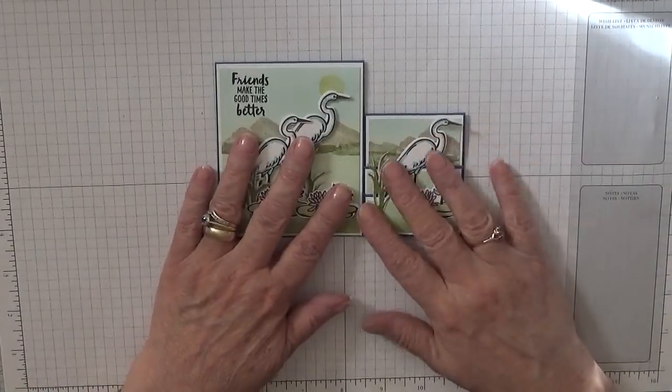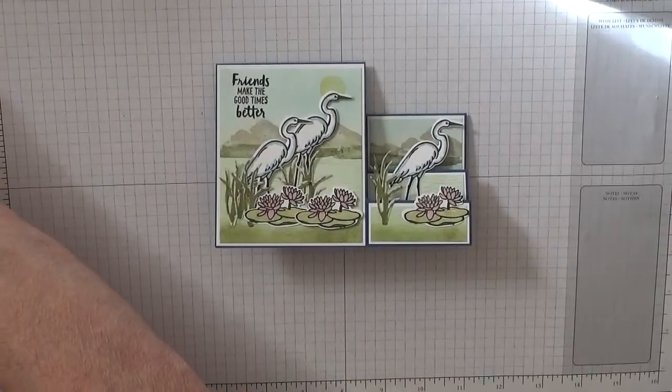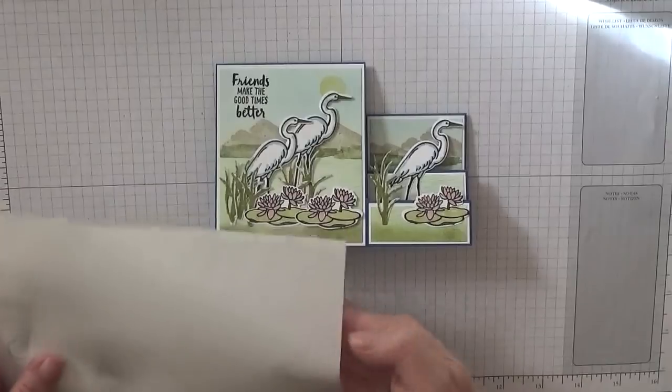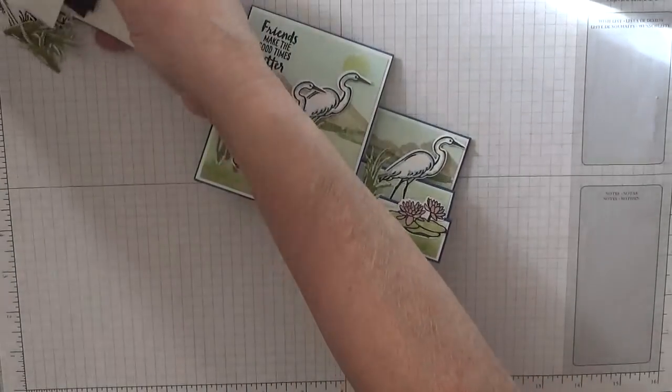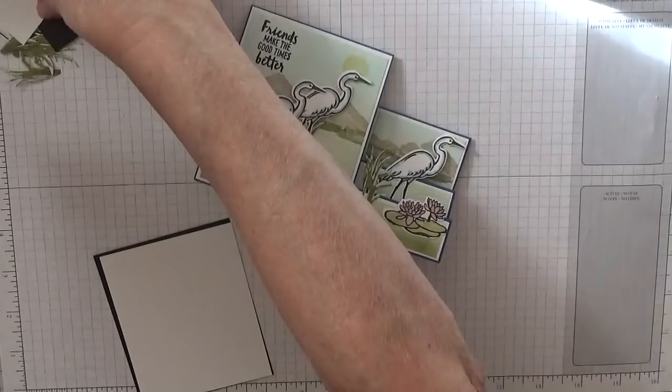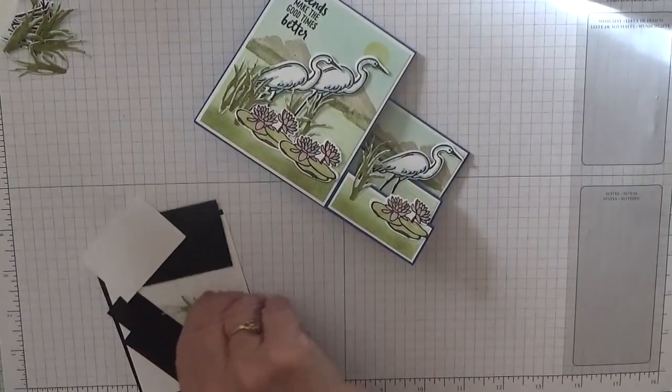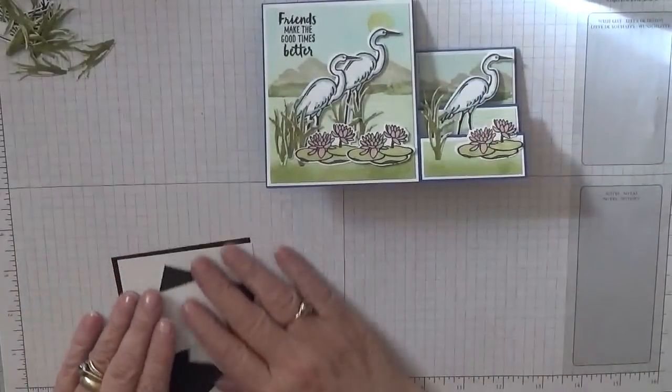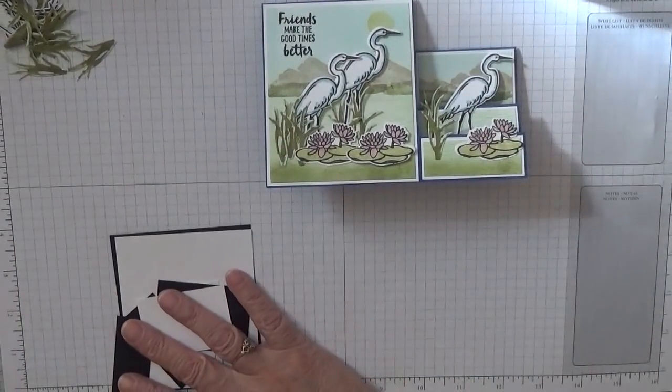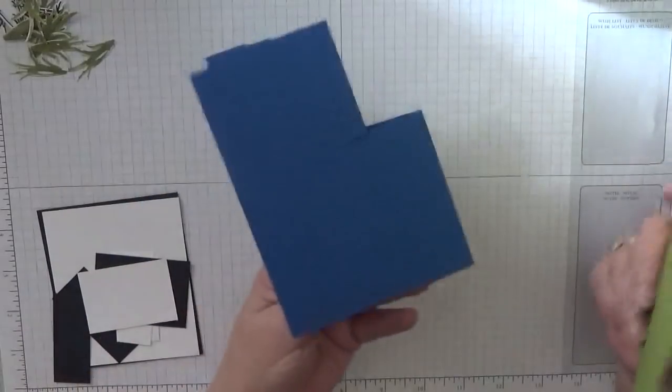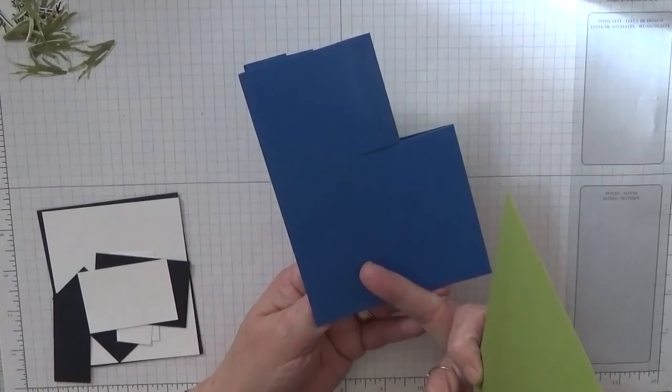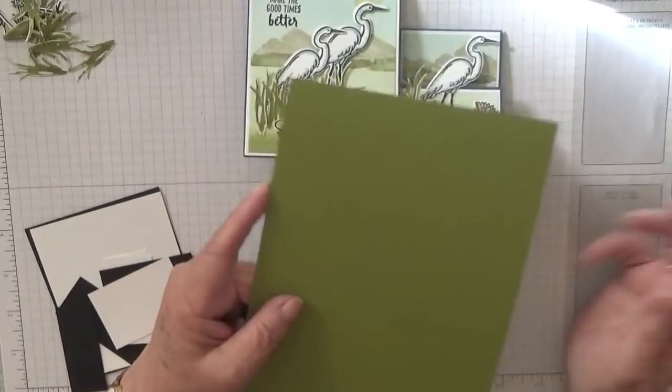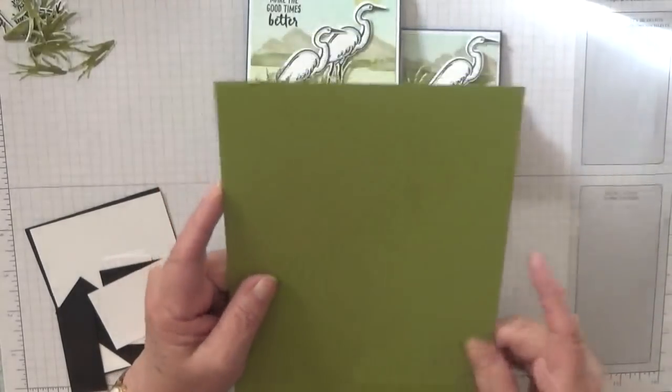For the card you will need a piece of, oh I've never got them out of my bag, hang on. You'll need a piece of, I'm going to use, here I used Pacific Point but on this one I'm going to use Old Olive so it's five and seven eighths by eight and a quarter.